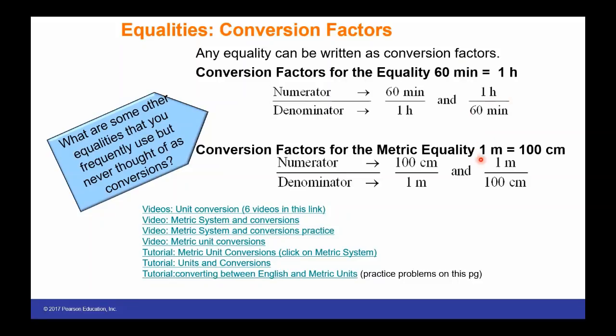Equally, if we were looking at a metric equality, one meter is equal to 100 centimeters. We can write them in either of these directions depending on what our calculation is calling for.